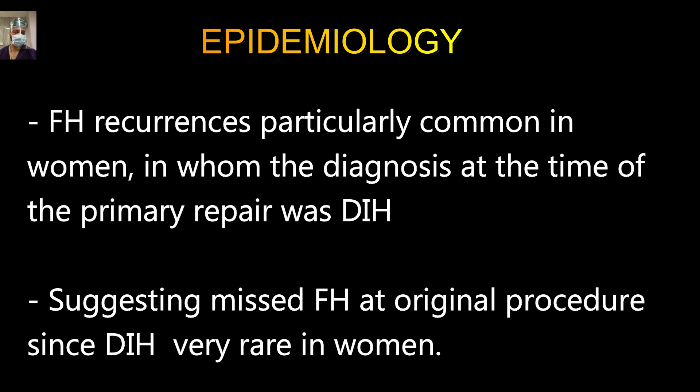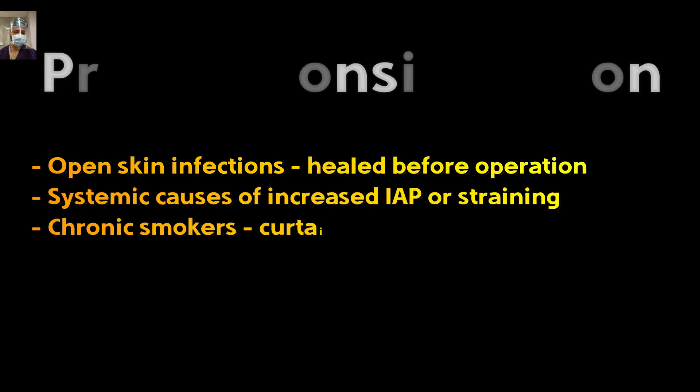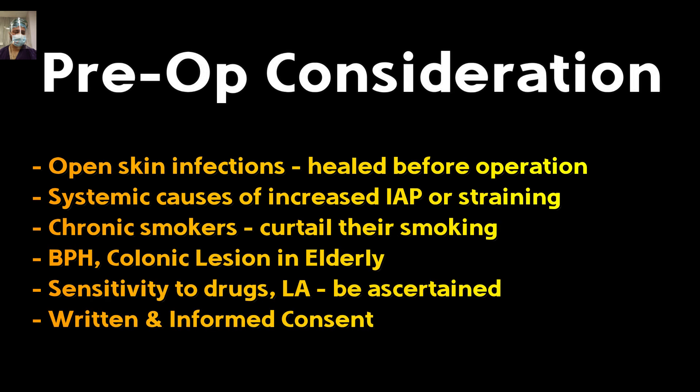When preparing a patient for elective hernia repair, pre-operative considerations include checking for skin or fungal infection in the incision line, which is a relative contraindication for surgery. Check for any systemic cause of increased intra-abdominal pressure or undue straining. Patients with chronic constipation and chronic smokers should be advised to quit smoking at least three to four weeks prior to surgery, as smoking increases recurrence risk. Benign prostatic hypertrophy, chronic lesions, and related conditions in the elderly should be ruled out, along with drug sensitivity and local anesthetic allergies. Always obtain written, informed consent explaining vital steps and recurrence rates.